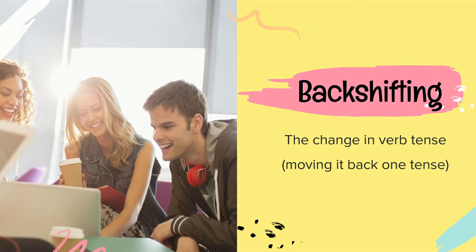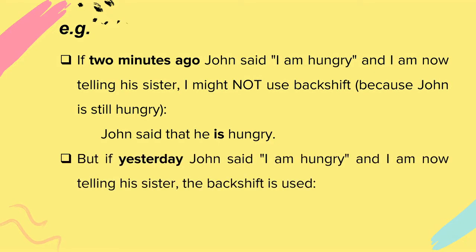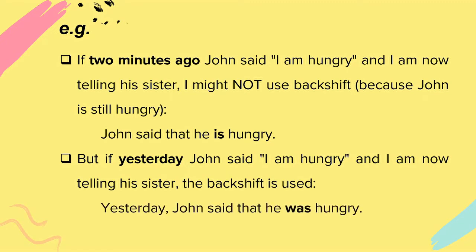Backshifting is the change in verb tense — moving it back one tense. For example, if two minutes ago John said 'I am hungry' and I am now telling his sister, I might not use backshift because John is still hungry: 'John said that he is hungry.' But if yesterday John said 'I am hungry' and I am now telling his sister, backshift is used: 'Yesterday John said that he was hungry.'